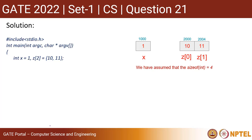First, we have an integer variable x with a value 1, and we assume its address is 1000. Then we have an array z of size 2, storing the values 10 and 11. So z[0] is 10 and z[1] is 11. We assume the base address of the array is 2000. Assuming the size of int is 4, the next address will be 2004.